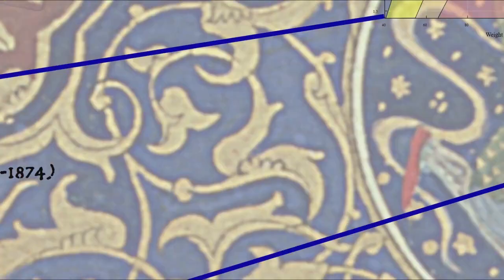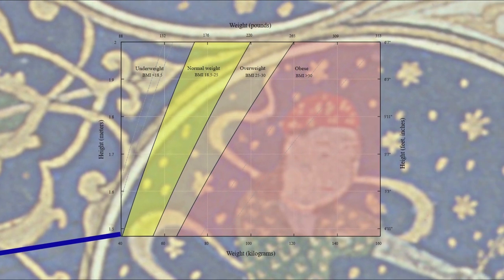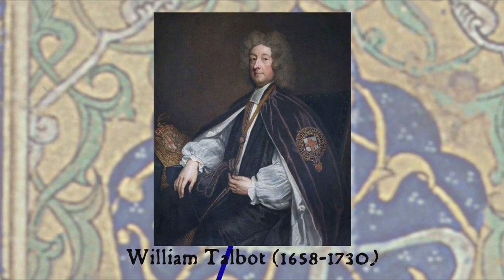Quetelet took what he learnt from probability in astronomy and began applying it to other things, including the statistics of human populations, and came up with the concept of the average man — there's that word average again — who is characterized by the mean values of measured variables that follow a normal distribution. This means he's responsible for the Body Mass Index, or BMI. So you can blame him as you toil in an attempt to reach some unrealistic expectation of the ideal body. And that brings us to the first life insurance company.